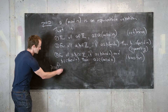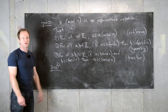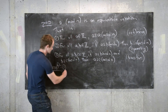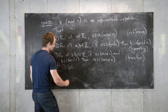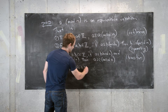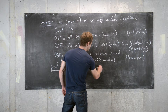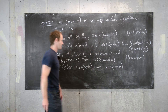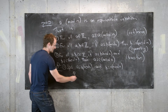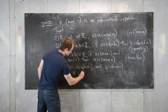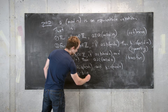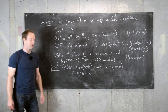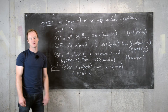Let's prove part three. Suppose a is congruent to b mod n and b is congruent to c mod n. This tells us that a minus b equals n times k for some integer k, because n divides a minus b, meaning a minus b is a multiple of n.